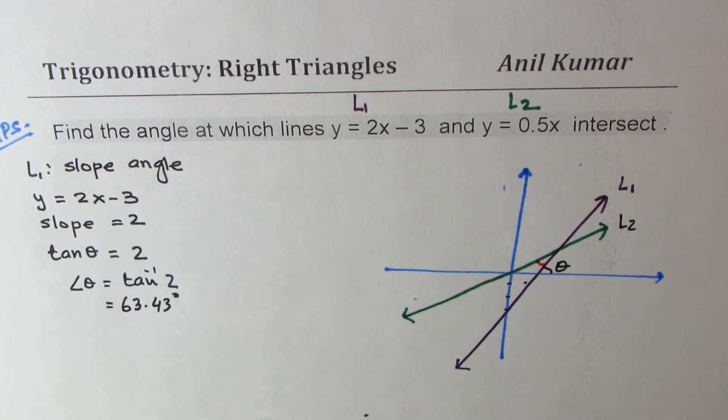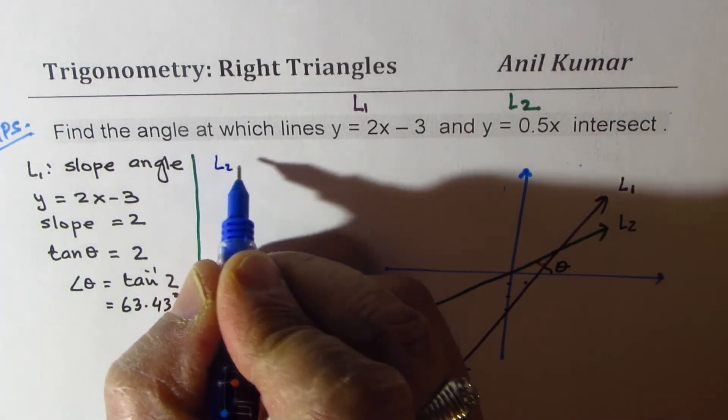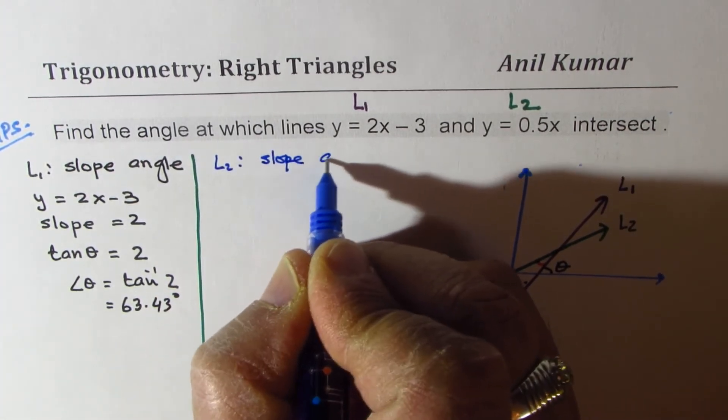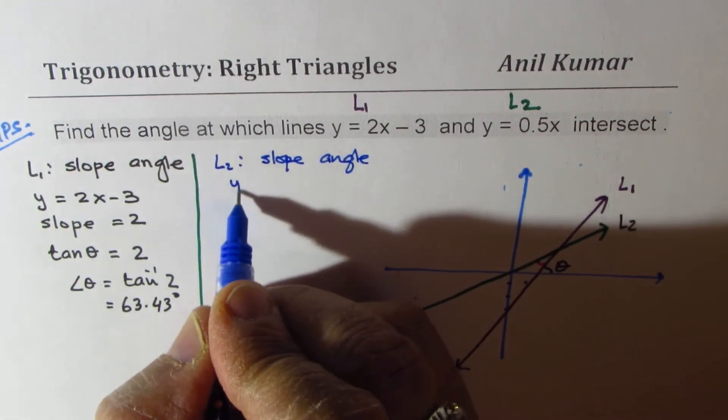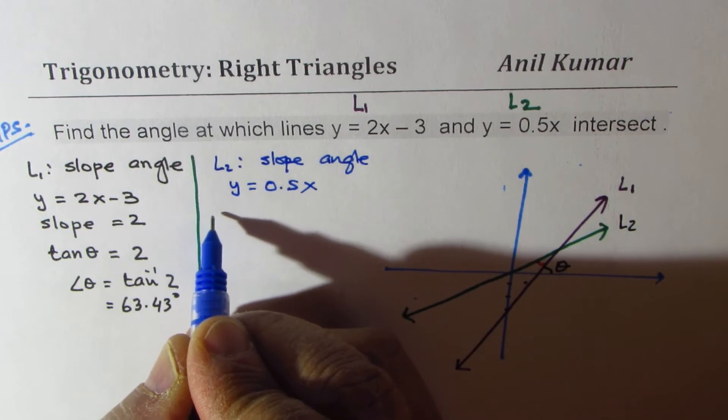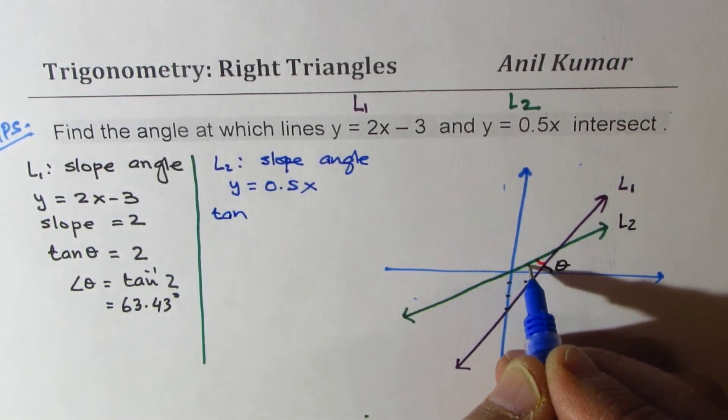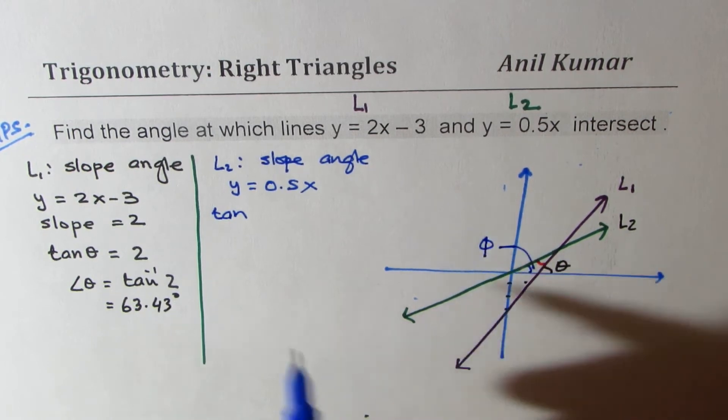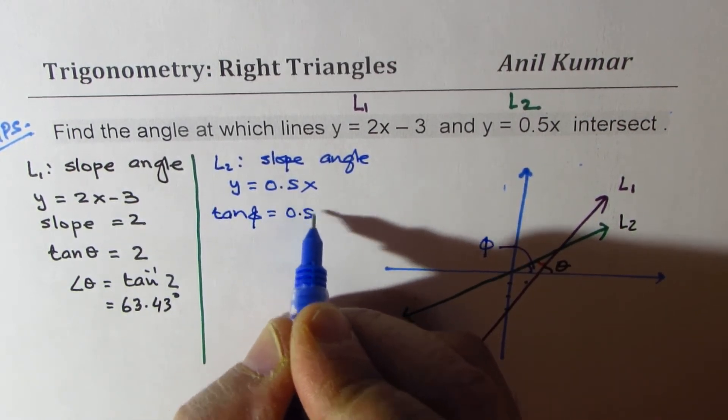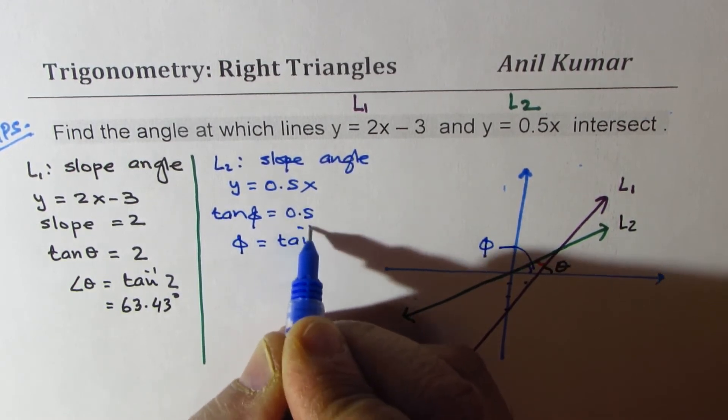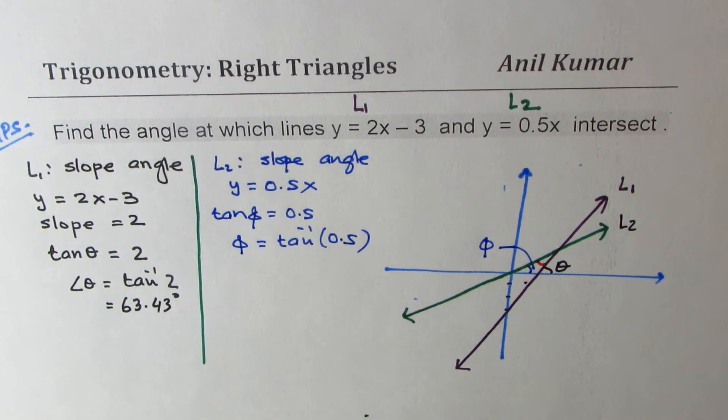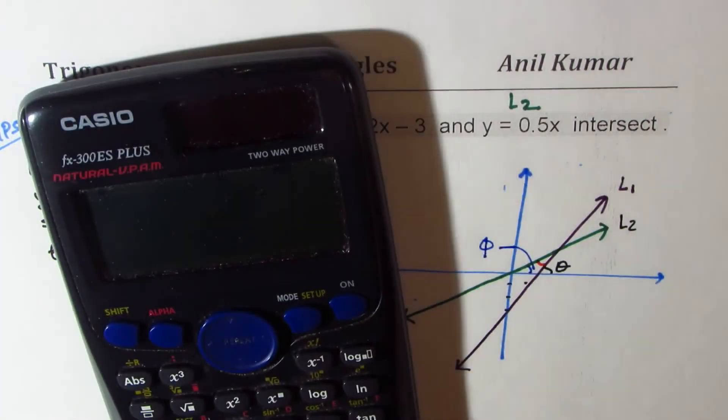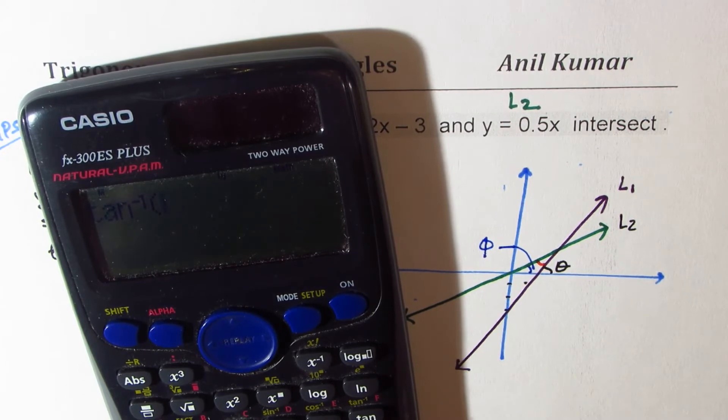Now let us do the same exercise for the other line. So now we'll work for line 2 and find the slope angle. Equation is y equals 0.5x. That means tan of the angle, let's call this angle phi. So tan phi is 0.5. So the angle phi is tan inverse of 0.5. Let's calculate this angle also. Shift tan inverse 0.5 equals 26.56.